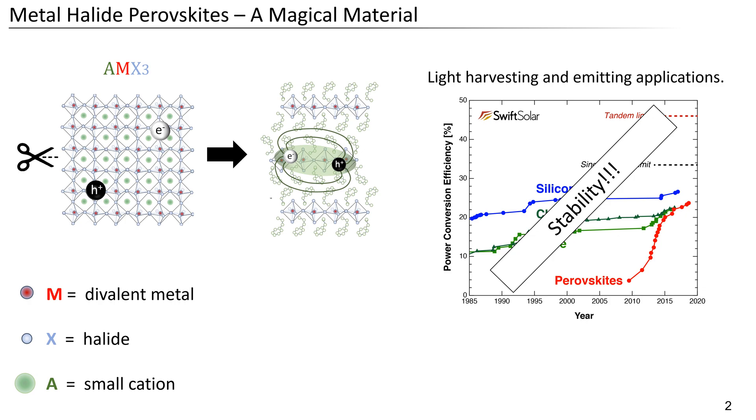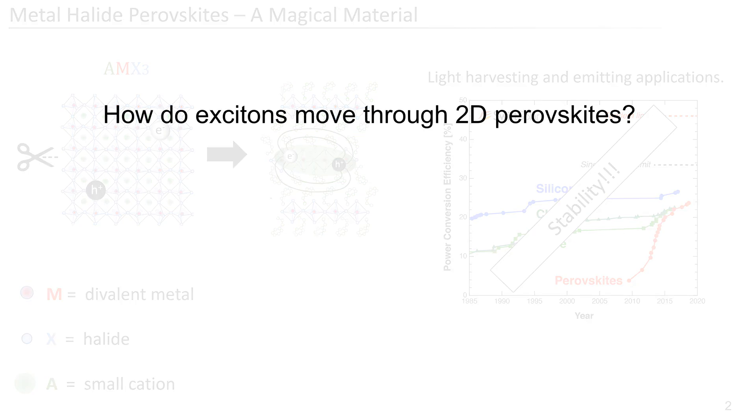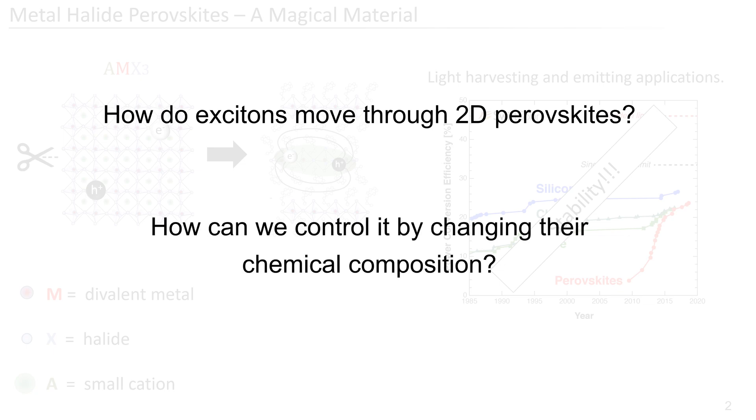In the coming minutes, I would like to provide you with some more insights on the exciton dynamics and address the following two questions. First of all, how do excitons move through 2D perovskites? And secondly, how can we control it by changing their chemical composition?